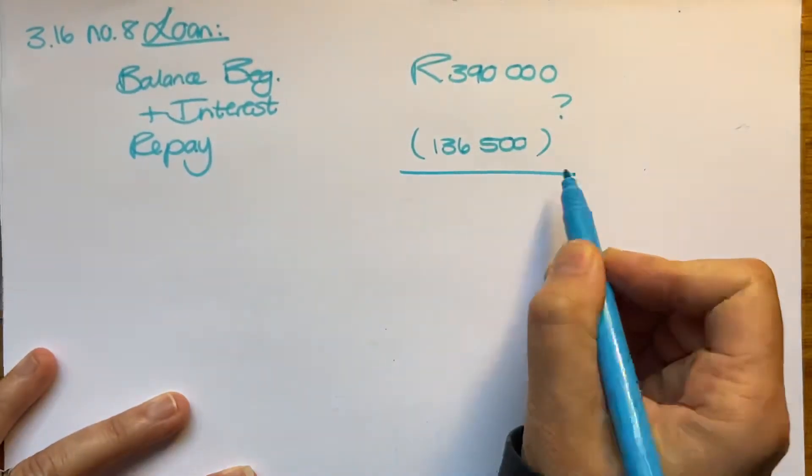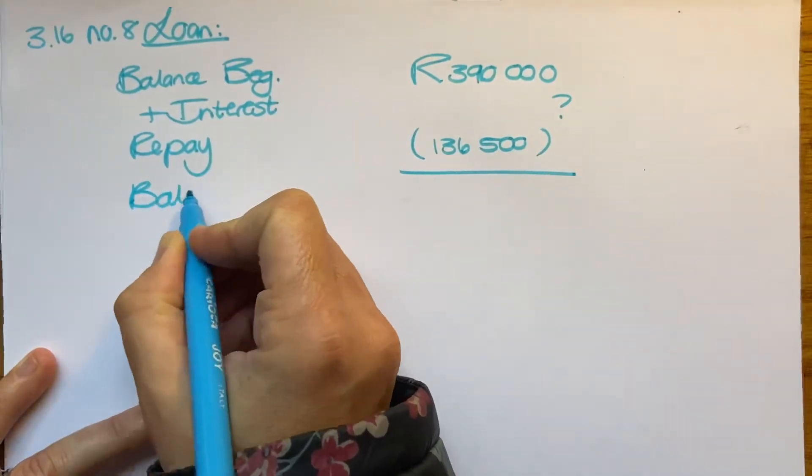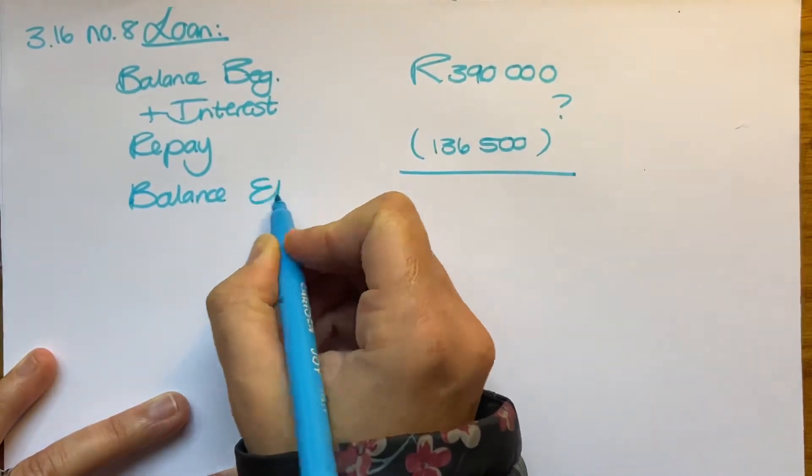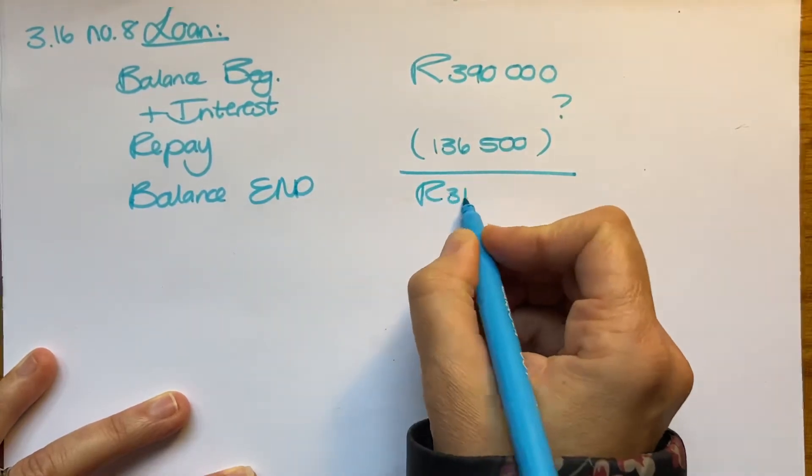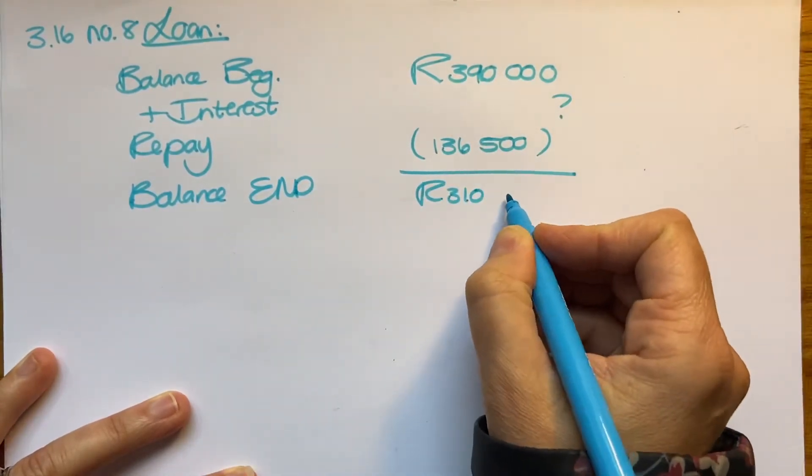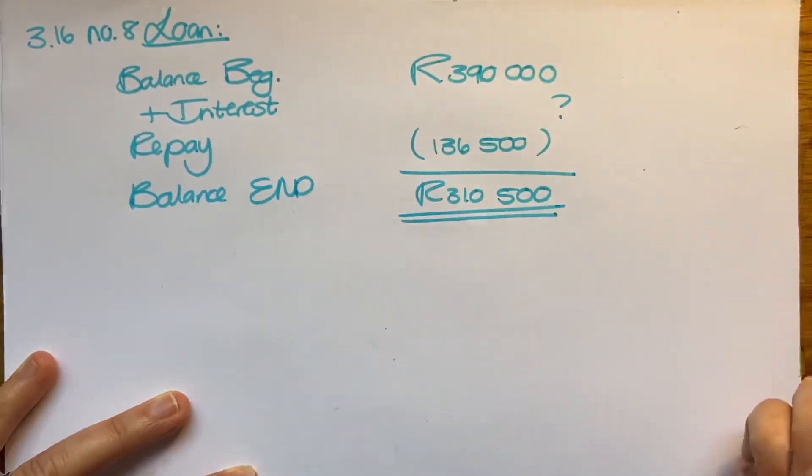My balance of my loan account at the end of the year is sitting on 310,500. Okay, that's what I end with.